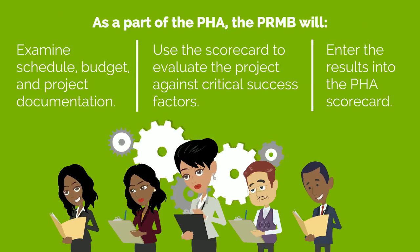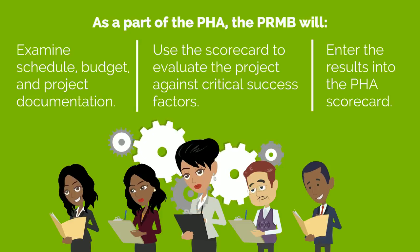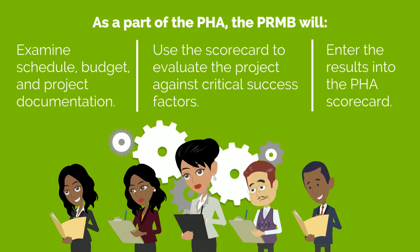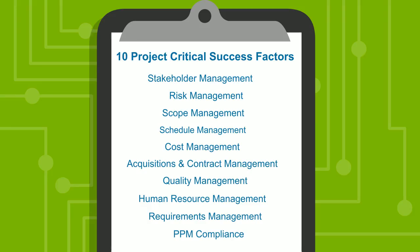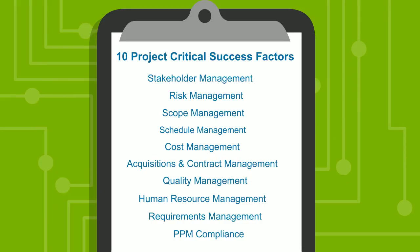As part of the PHA, the PMRB will examine schedule, budget, and project documentation, and use the scorecard to evaluate the project against critical success factors. The 10 project critical success factors are: Stakeholder Management, Risk Management, Scope Management, Schedule Management, Cost Management, Acquisition and Contract Management, Quality Management, Human Resource Management, Requirements Management, and PPM Compliance.